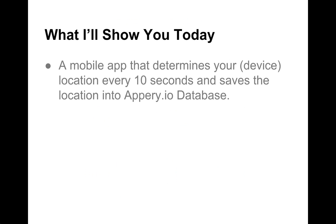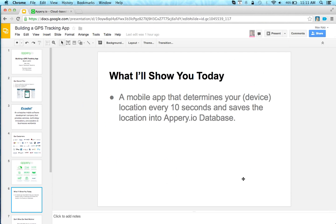We are going to save the location into the database — specifically the latitude and longitude of the current position. You can then use a REST service such as the Google Geocoding API, where you give it the latitude and longitude information and it returns the address or city. That's one example of how you can take this app further.